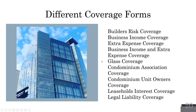Condominium association coverage covers exterior common grounds — stairways, hallways, the clubhouse. Condominium unit owners coverage covers the interiors. For a brand-new condo building that has both coverages, you only need an HO-4 because the association covers both exteriors and interiors like kitchen cabinets. Eventually the unit owner's coverage gets dropped, and then you're responsible for the interior — so you'd need to move to an HO-6. If the association has both coverages, an HO-4 works; if it only has the association coverage, you want an HO-6.